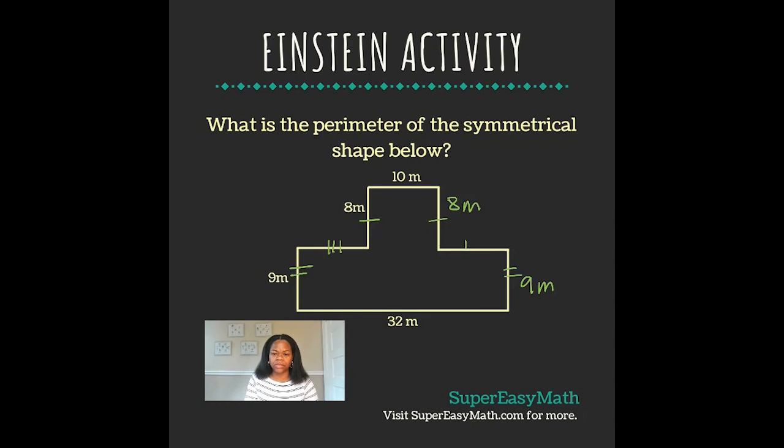That leaves us with these two lengths to figure out, and I know that from this point to this point is 32 meters, like the problem explains. And so that means the opposite of that is true too, so this length plus this length plus this length must also equal 32.